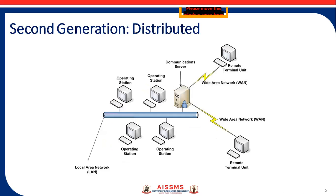Now let us see the second generation, which is the distributed system. The next generation SCADA systems took advantage of developments and improvements in system miniaturization and local area networking (LAN) technology to distribute the processing across multiple systems. Multiple stations, each with a specific function, were connected to a LAN and shared information with each other in real time. These stations were typically of the micro/mini computer class, smaller and less expensive than their first generation processors.